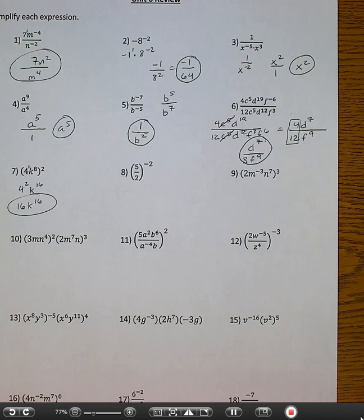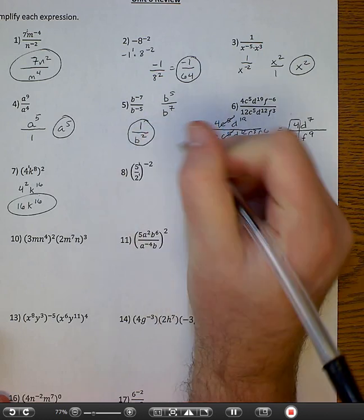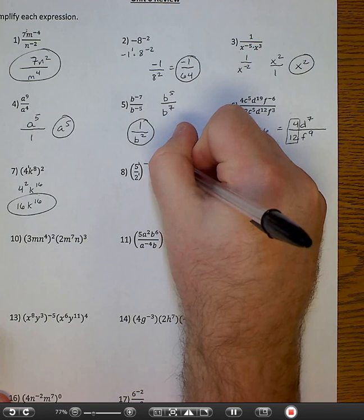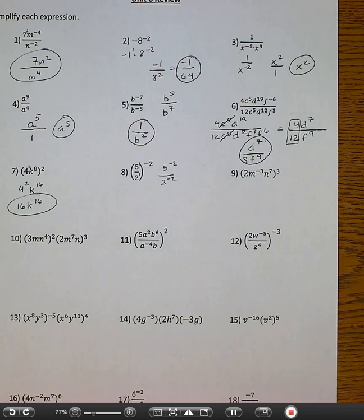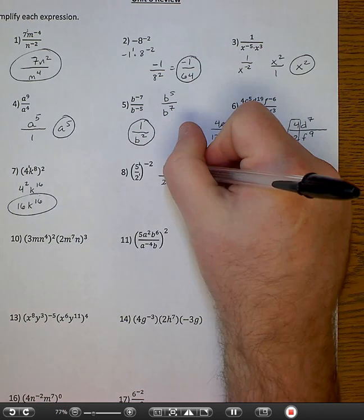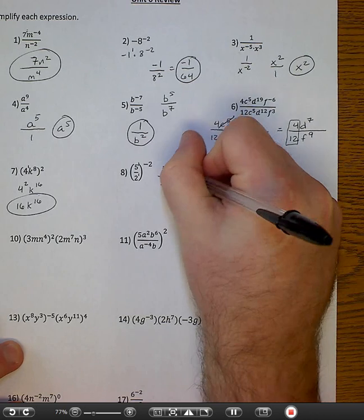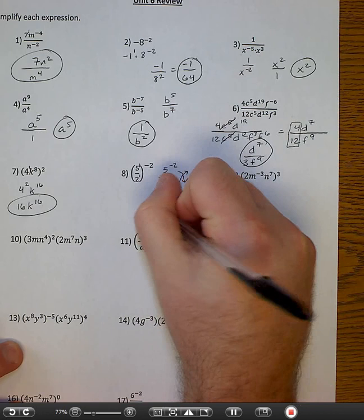Number eight. Five over two to the negative second. Each base in there has an exponent of one, and each of them gets multiplied by negative two. So I'm going to have five to the negative second over two to the negative second. A negative exponent means it moves — it does not make it negative. So I'm going to move the five to the bottom, and it's going to be five squared. And I'm going to move the two to the top, and it becomes two squared. Two squared is four, five squared is twenty-five. Done.